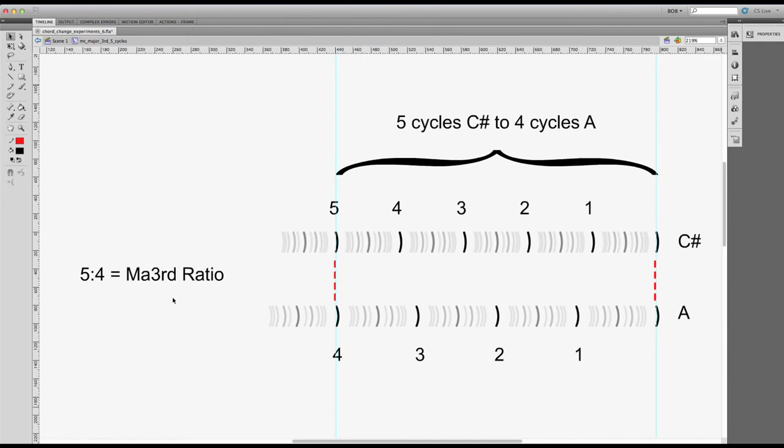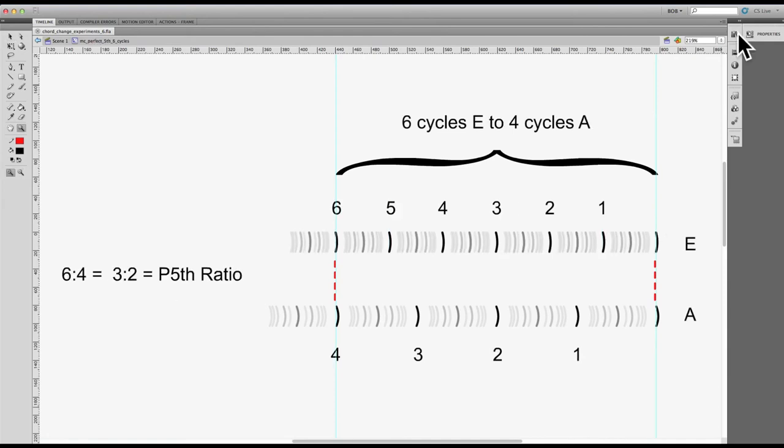This is the major third difference, it's a 5 to 4 ratio. Perfect fifth ratio, 6 to 4, and 3 to 2.